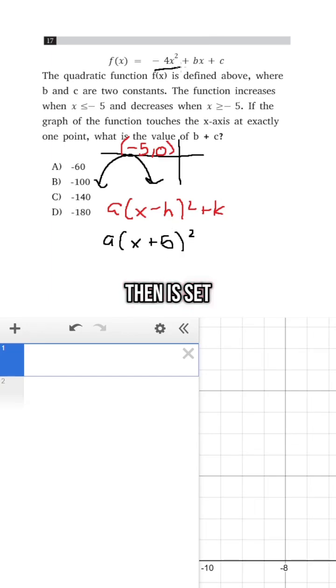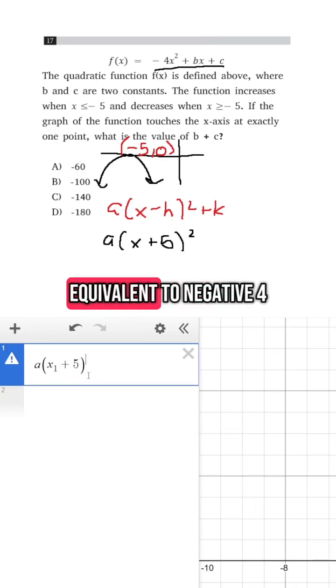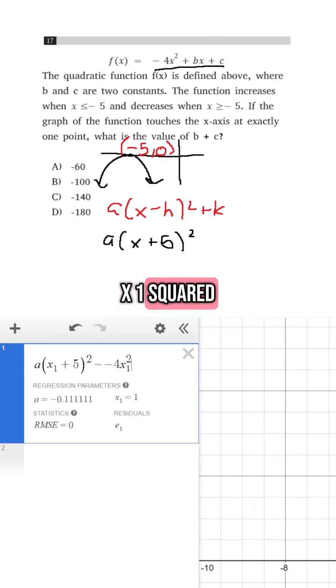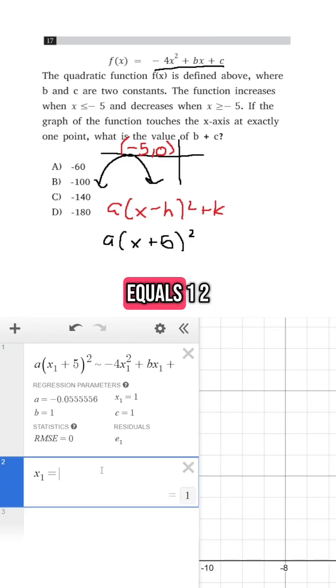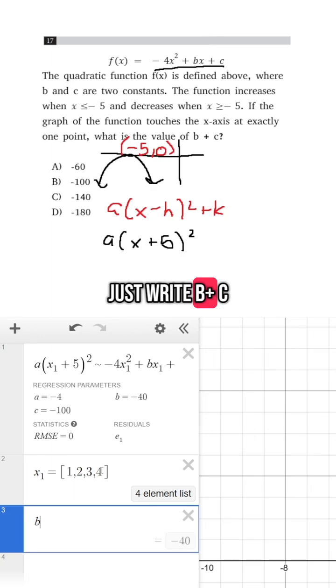And all I have to do then is set it equivalent to the equation they gave us and see what they tell me b and c are. So all I need to do is a times x1 plus 5 squared is equivalent to negative 4x1 squared plus bx plus c. And then all I have to do is give it a list for x1. So x1 equals 1, 2, 3, 4. And then if I just write b plus c, I'll get my answer of negative 140. So the answer there is going to be C.